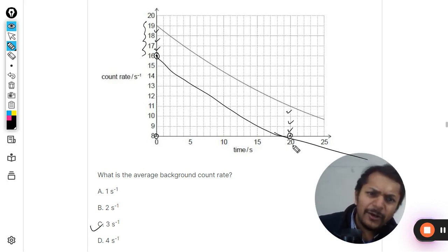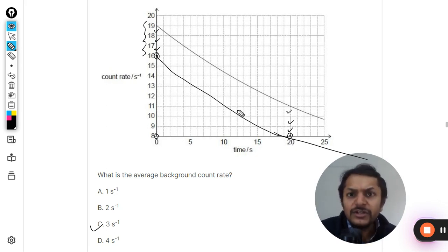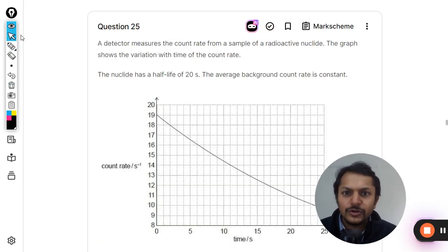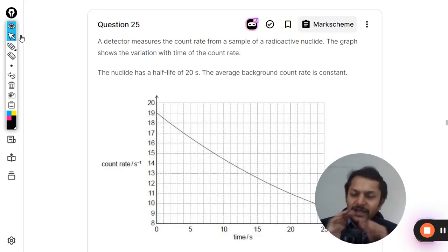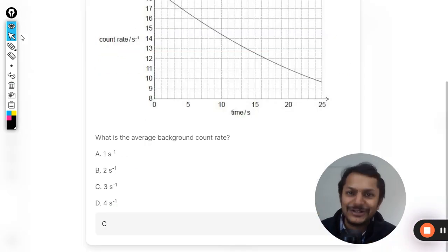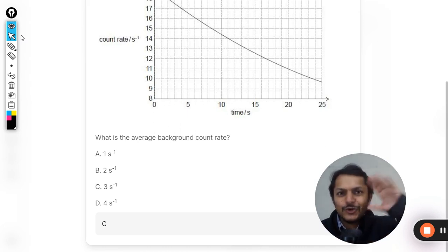3 has been added there so the disturbance is caused because of 3. Otherwise 20 seconds cannot be half life. That is the condition. This is how we do this question. Let me show you the answer on the mark scheme. Is it really the answer is C? And yes, the answer is C. If there is any problem, please mention that in the comment section. Please subscribe to the YouTube channel.